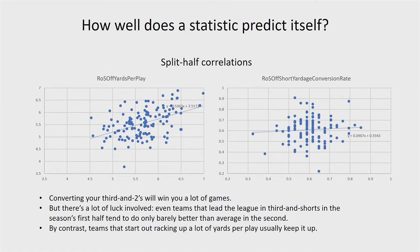The first thing we need to assess is how well a statistic predicts itself. If you take something like third-down short-yardage conversions, they're really important — if you know how well a team did on converting third-and-twos, you'll have a pretty good sense of who won. However, performance in these short-yardage situations is very, very hard to predict — it's close to random. As you can see, teams that start out the season converting 90% of their third-and-twos, third-and-ones, and fourth-and-ones basically wind up doing only average in the second half or even below. So looking at how a team did in the past in this category is not a helpful guide to how they'll do in the future.